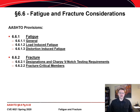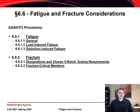AASHTO provisions for fatigue and fracture are found together in section 6.6 of the specification. Section 6.6.1 covers load-induced and distortion-induced fatigue, while section 6.6.2 covers brittle fracture. Load-induced fatigue occurs as a result of repeated cycles of loading or deformations, whereas brittle fracture is a sudden fracture that occurs in the absence of repeated loading, sometimes under relatively low levels of stress. This segment covers load-induced fatigue primarily, but closes with a couple of slides about distortion-induced fatigue. The idea of brittle fracture is covered separately.